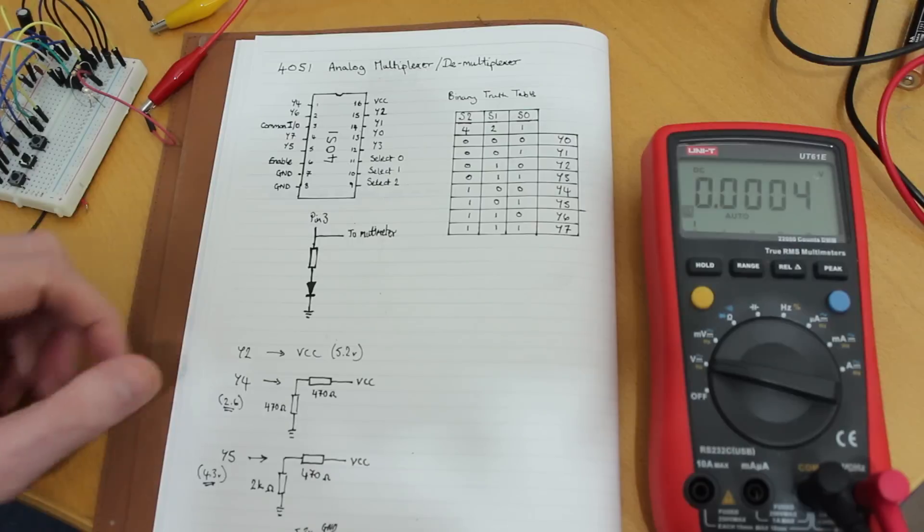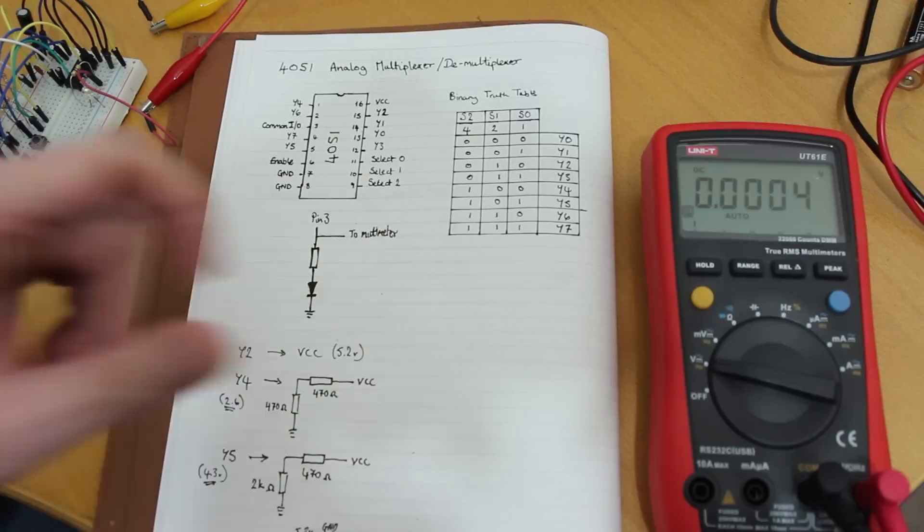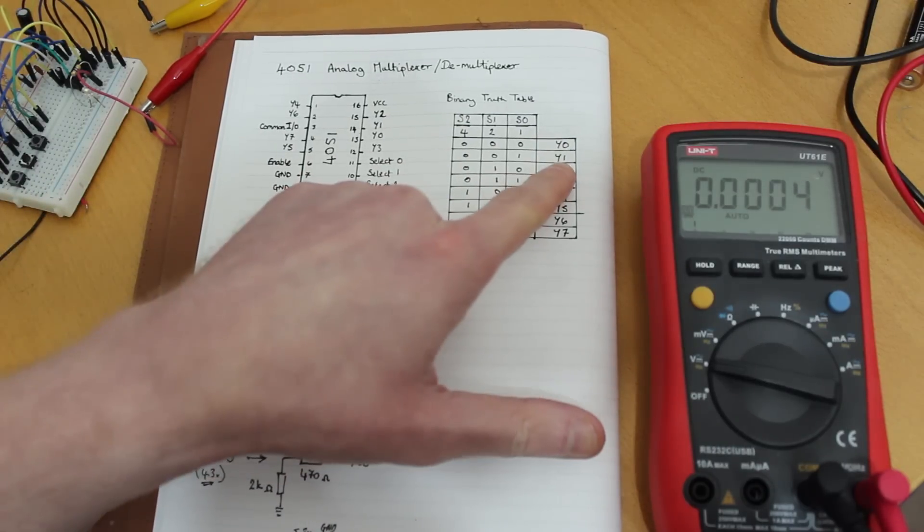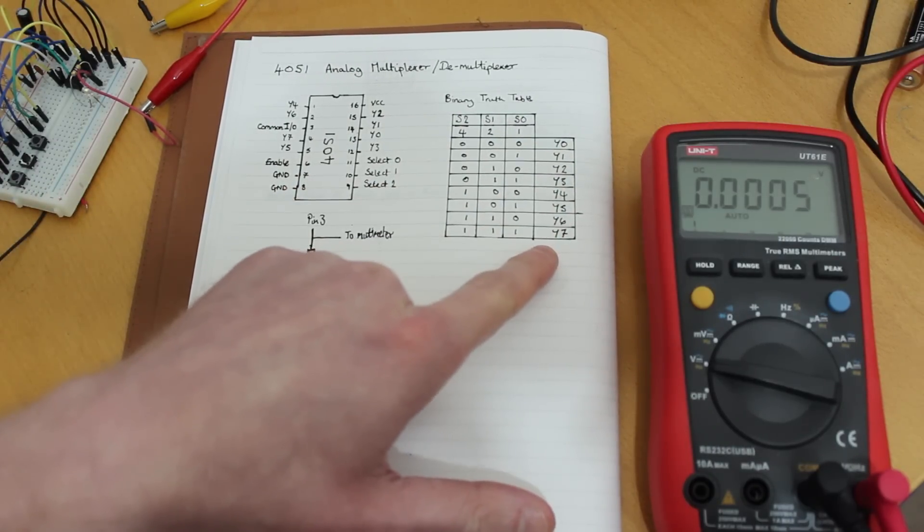It also has a binary truth table on these select pins here. So you put them high or low and it dictates which one of the outputs or inputs is going to be used. In this case, we're using them as inputs.